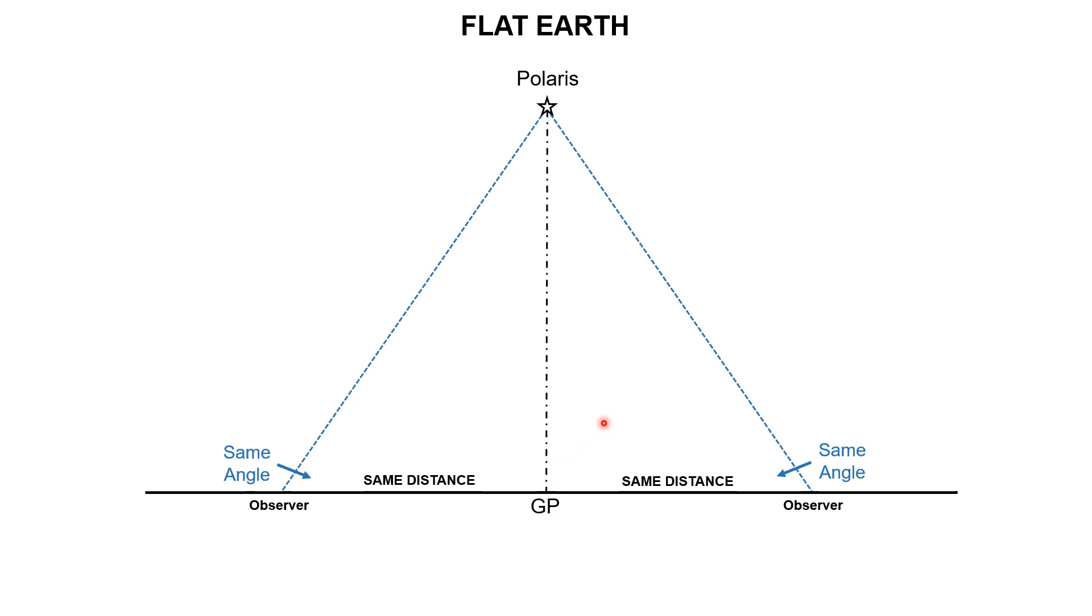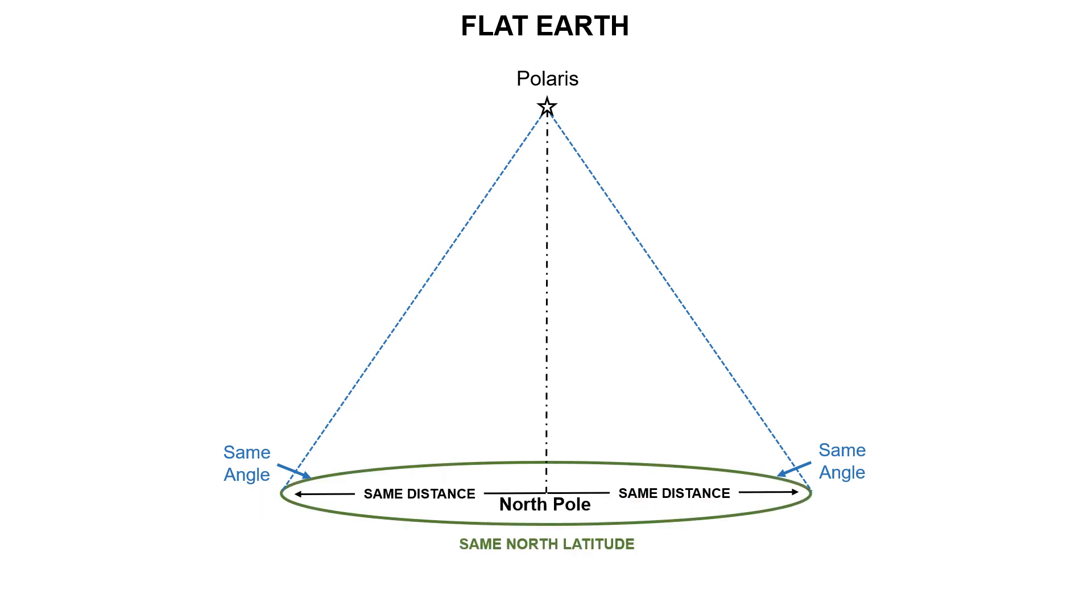that means that these triangles are equal and the distance from the ground position to the observer on each side is also the same. And if you took this distance here and made a circle, that would be the same north latitude around the North Pole.